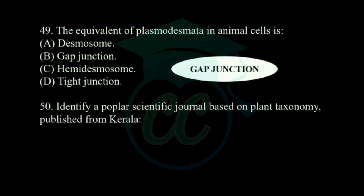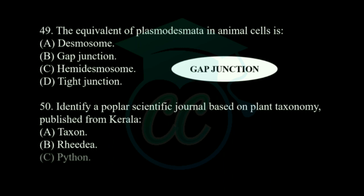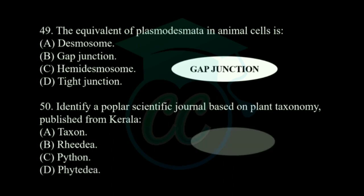Next question: the equivalent of plasmodesmata in animal cells is — options: desmosomes, gap junctions, hemidesmosomes, and tight junctions. The correct answer is gap junctions. Next question: identify a popular scientific journal based on plant taxonomy published from Kerala — options: Taxon, Rheedea, Phyton, and Phytotaxa. The correct answer is Rheedea. These are the 50 objective type questions of Part A.